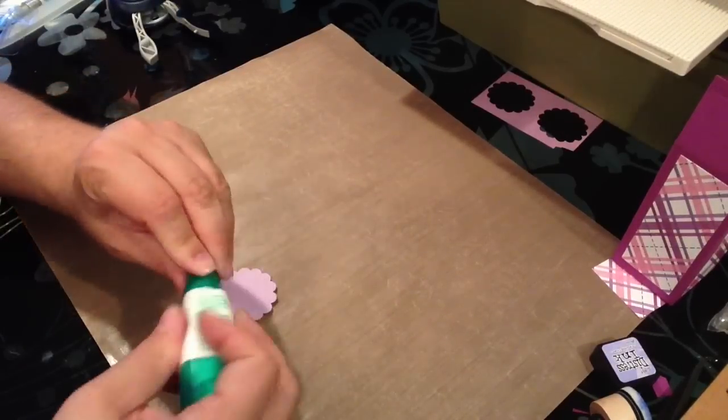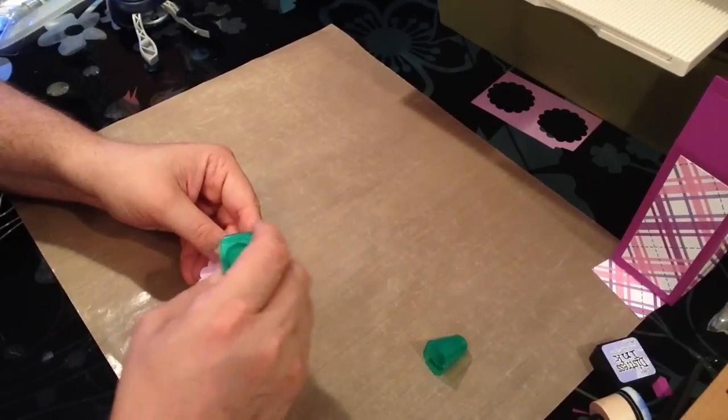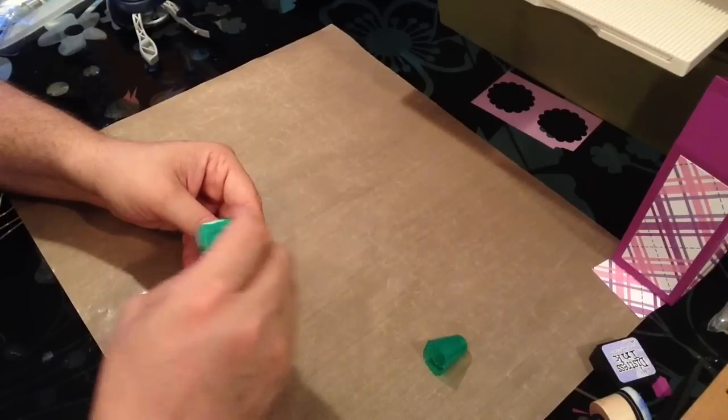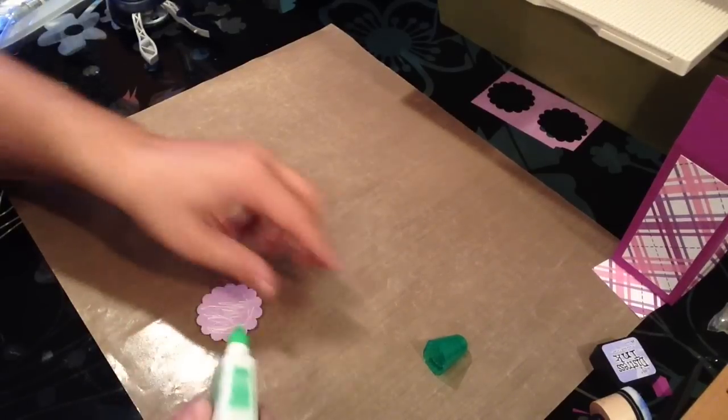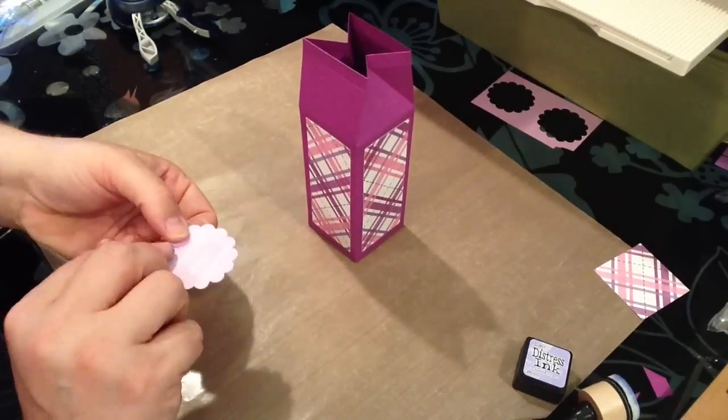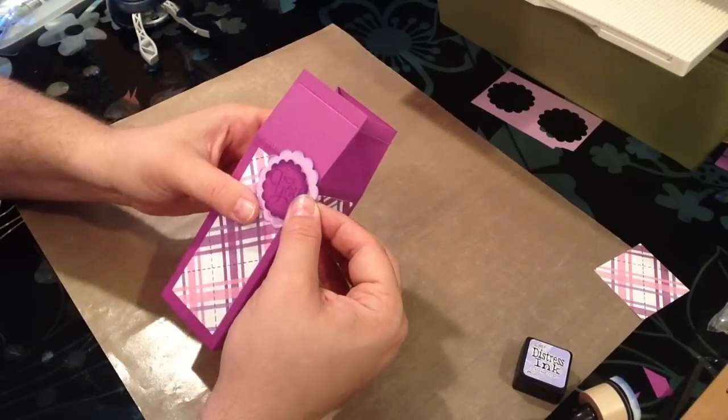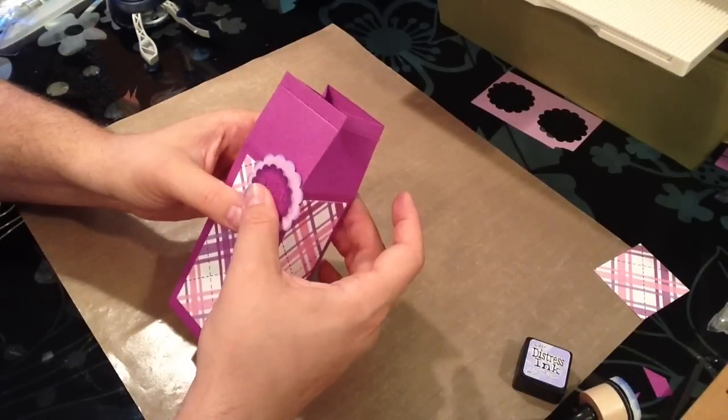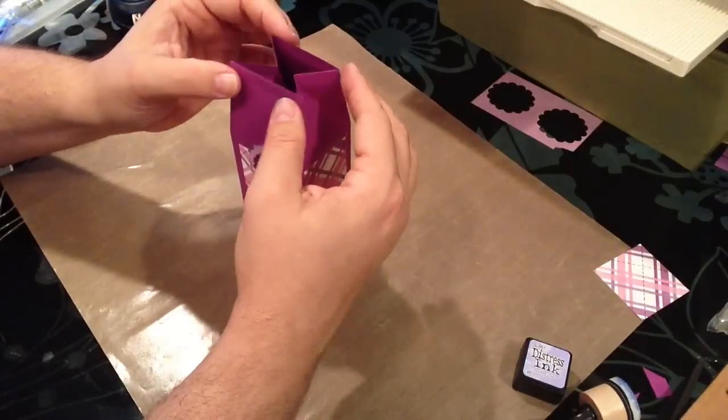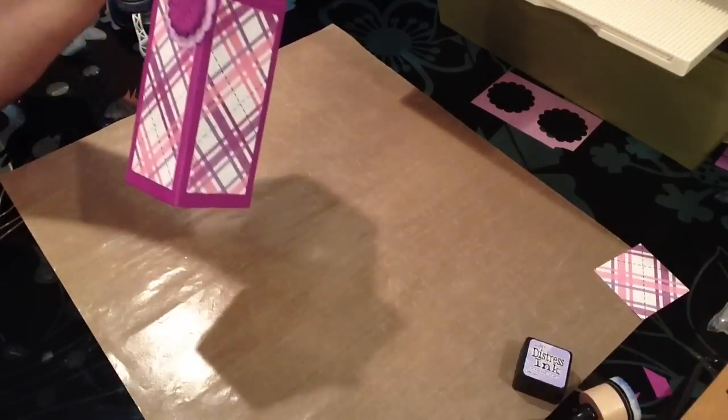I'm going to use glue again here. You could use a dimensional, you could use sticky strip or anything here. I'm just going to put this on my box kind of at a jaunty angle maybe up toward the top here. Let that sit for a few seconds. Again I would put whatever it is in there and then I would just glue this shut. So there we have it.